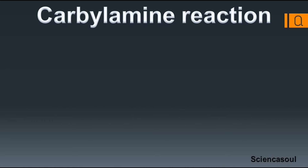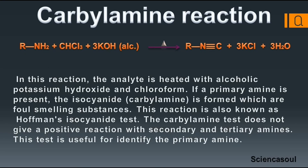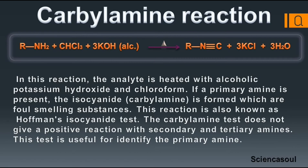Carbylamine Reaction. In this reaction, the analyte is heated with alcoholic potassium hydroxide and chloroform. If a primary amine is present, the isocyanide — carbylamine — is formed, which are foul-smelling substances.